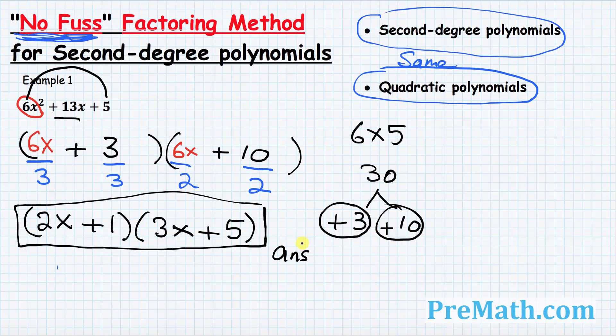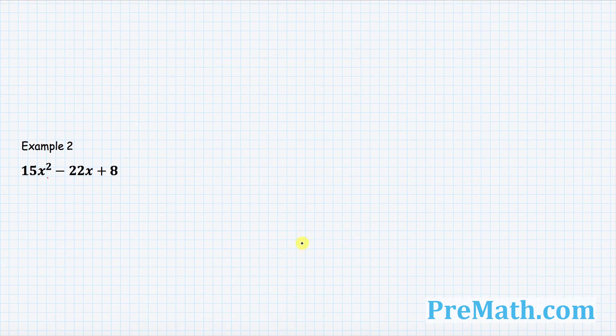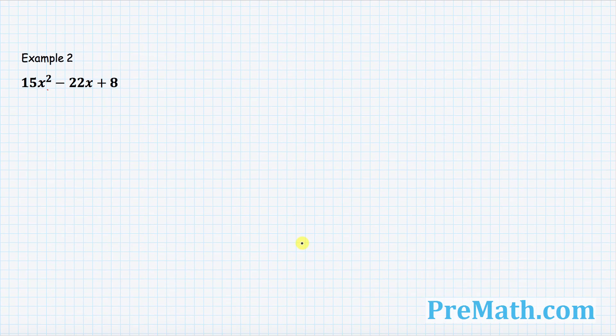Let's go ahead and do one more example, just like this one, to make sure that we grasp this idea. In the second example, you can see once again that we have the leading coefficient is not 1. So we're going to be applying the same method. The very first step, once again, we're going to be following the same step as we did in the previous example.